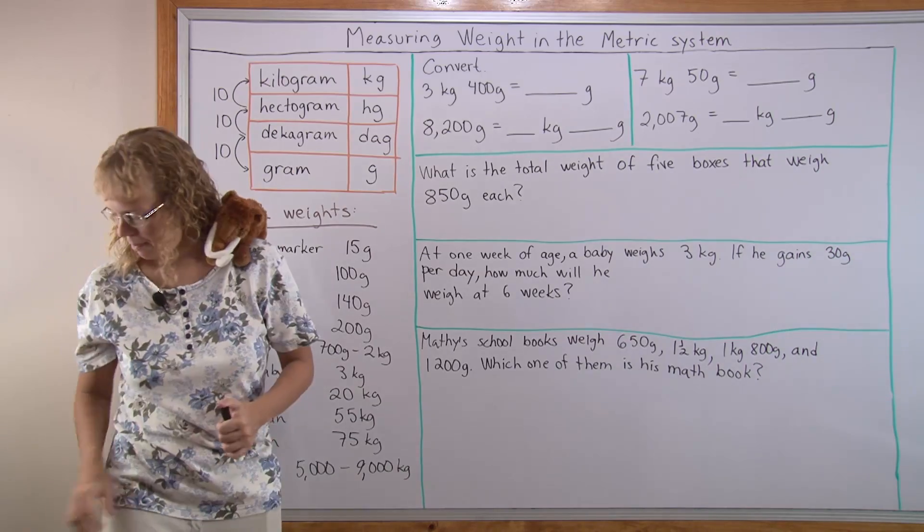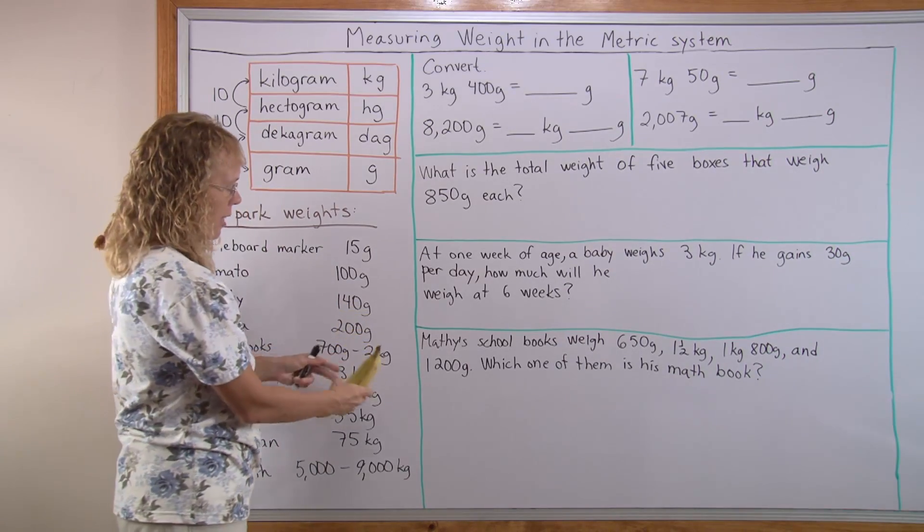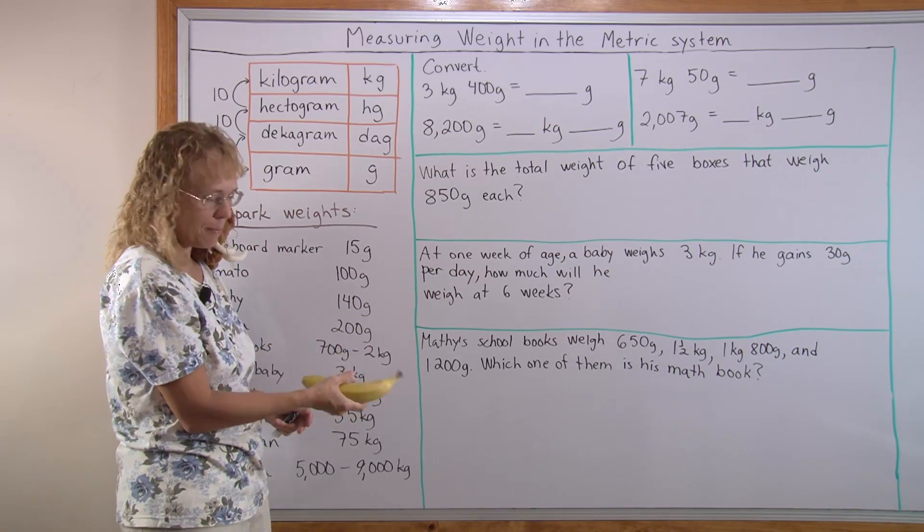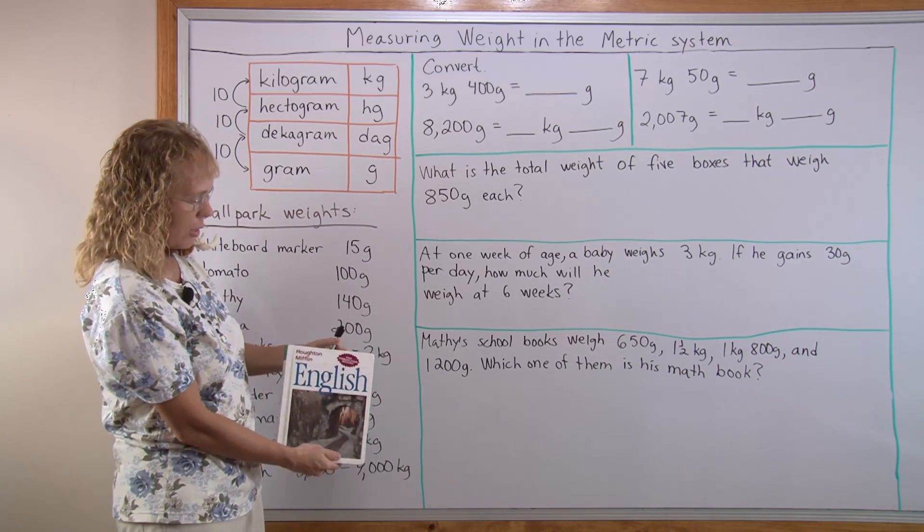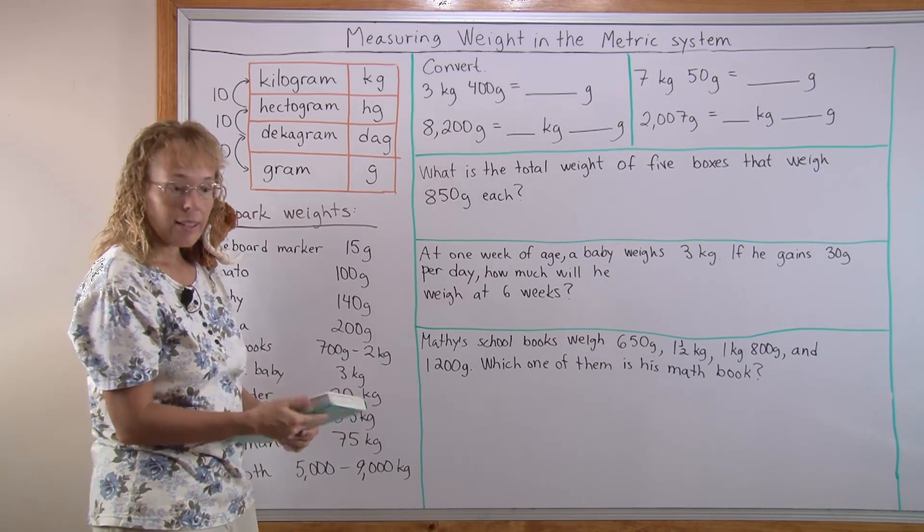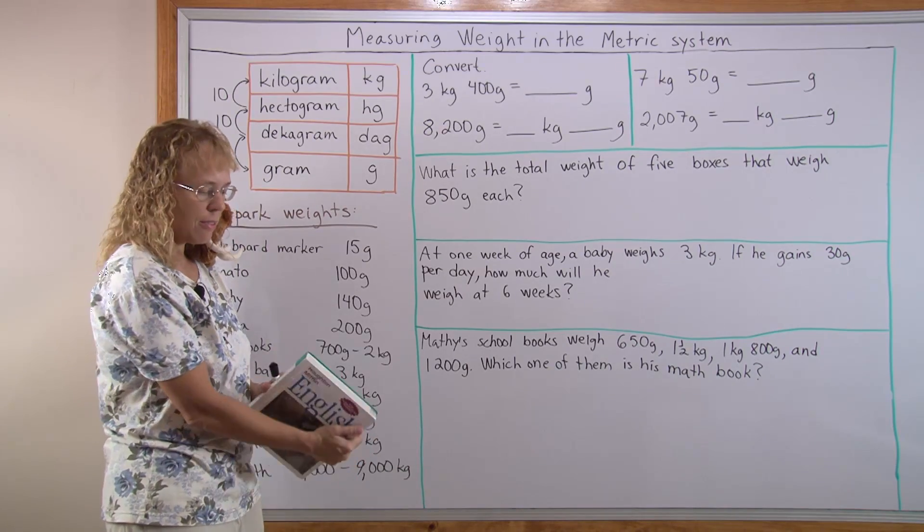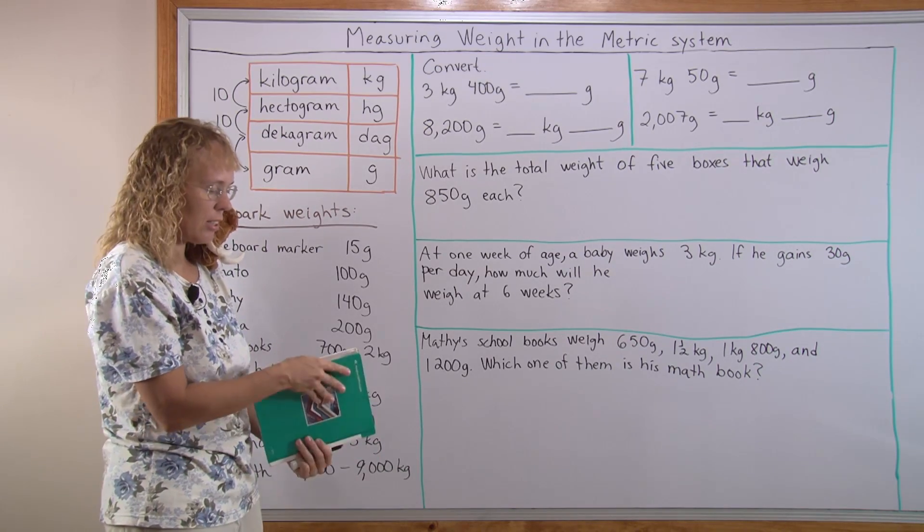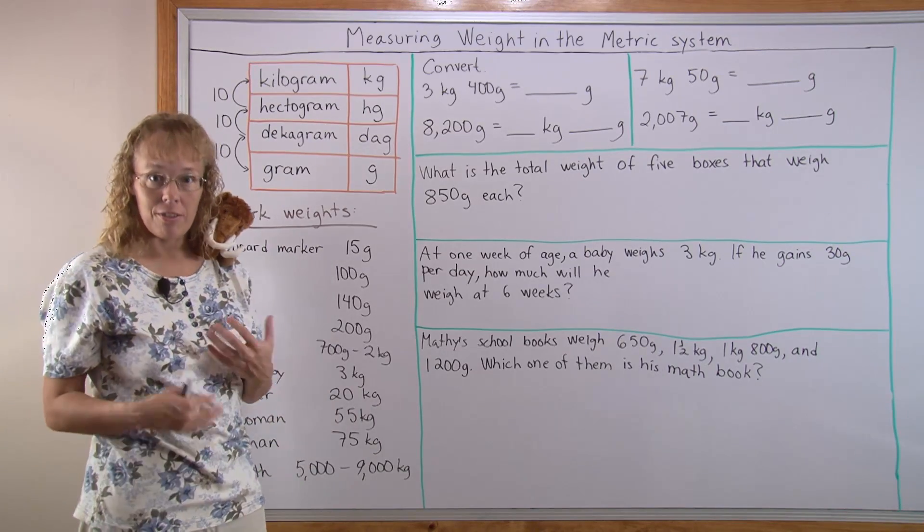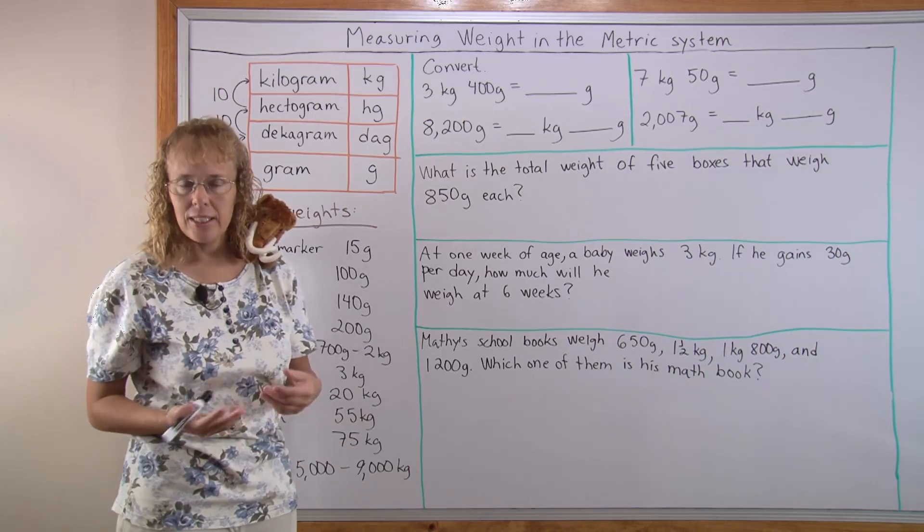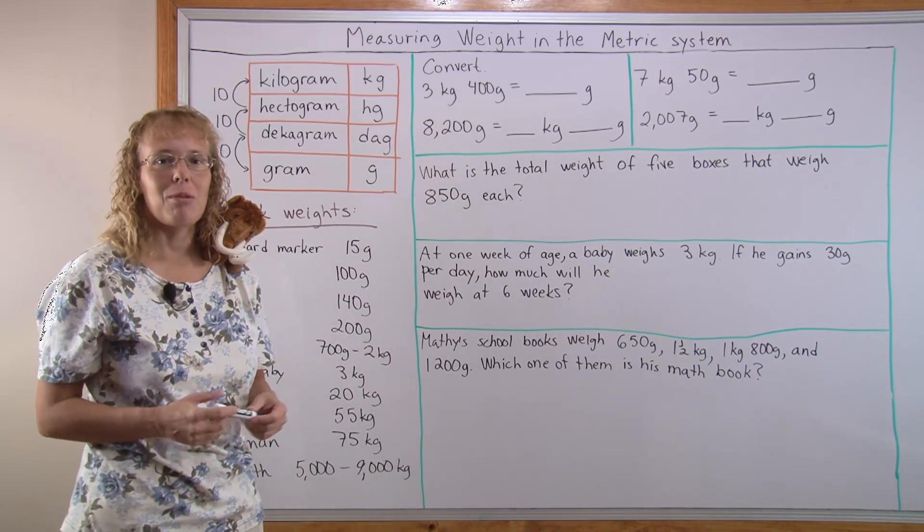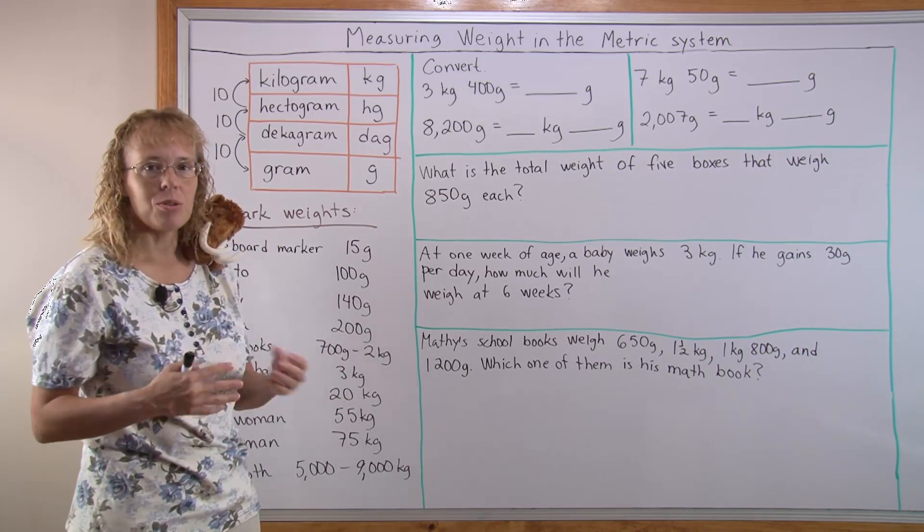Banana. Yep this is a banana I weighed yesterday. About 200 grams. School books can vary of course. Here I have one school book that is one kilogram 100 grams. It's fairly heavy. Newborn babies are usually around three kilograms. And first grader about 20 kilograms. I was 20 kilograms when I was in first grade. But of course that can vary too.